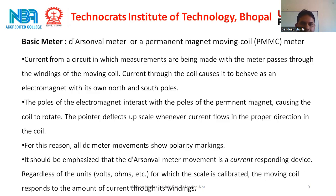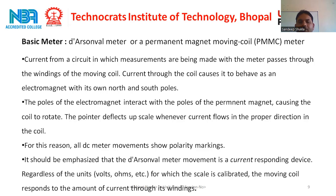The current from a circuit in which measurements are being made passes through the windings of the moving coil. Current through the coil causes it to behave as an electromagnet with its own north and south poles. The poles of the electromagnet interact with the poles of the permanent magnet, causing it to rotate. The pointer deflects on the scale whenever current flows in the proper direction in the coil. For this reason, all DC meter movements show polarity markings. It should be emphasized that the D'Arsonval meter movement is a current-responding device, regardless of the units — volts, ohms, etc. — for which the scale is calibrated.